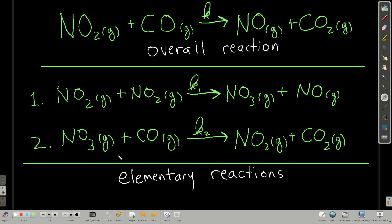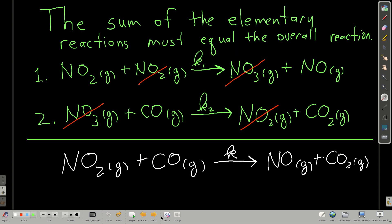These two steps are called the elementary steps, elementary processes, or elementary reactions, whereas the overall reaction is what we commonly write down. When we're trying to figure out the mechanism — which is the series of elementary steps by which the process happens — we have to make sure that a couple of requirements are met.